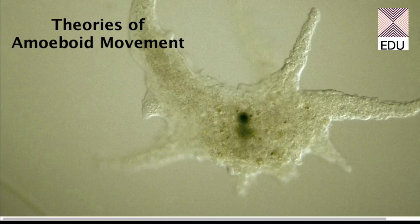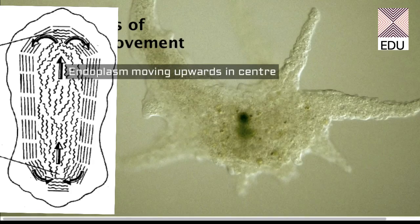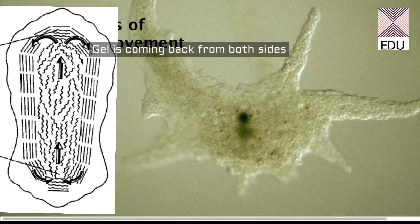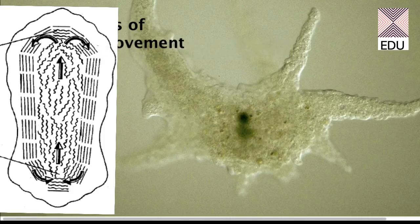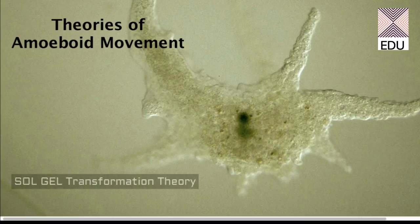The next theory is the fountain zone theory. This theory explains that the movement of amoeba is due to the movement of endoplasm into the pseudopodium in a particular direction — just like a fountain where water moves up and comes back down. This is a kind of cyclical movement of endoplasm in the amoeba.